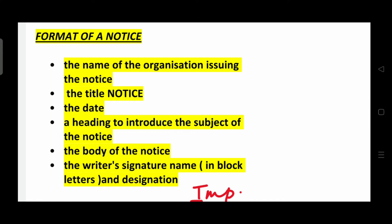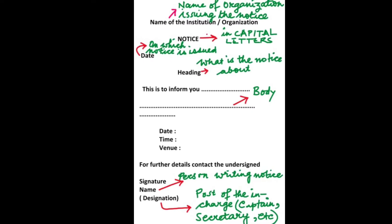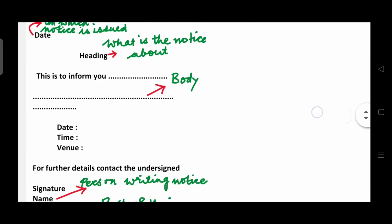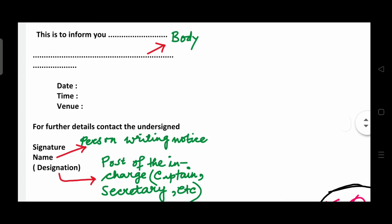Follow the format of a notice because format is an integral part of the CBSE marking system. This is how your notice must look like. In the beginning, write down the name of the organization issuing the notice. Then write 'NOTICE' in capital letters on the next line. After that, mention the date on which the notice is issued. You will also write a heading to introduce the subject. Begin your body with words like 'This is to inform you...'. Date, time, and venue may be added if required. Conclude with 'For further details, contact the undersigned.' Don't forget to write your name and designation along with your signature.